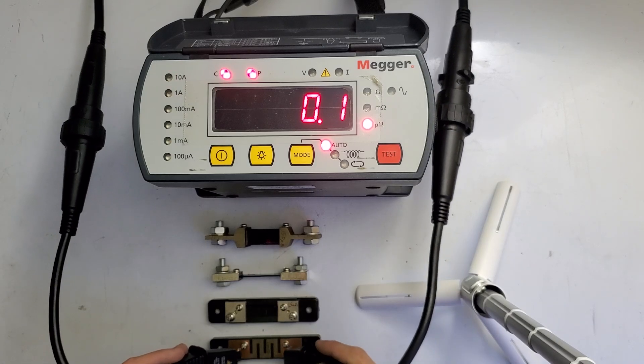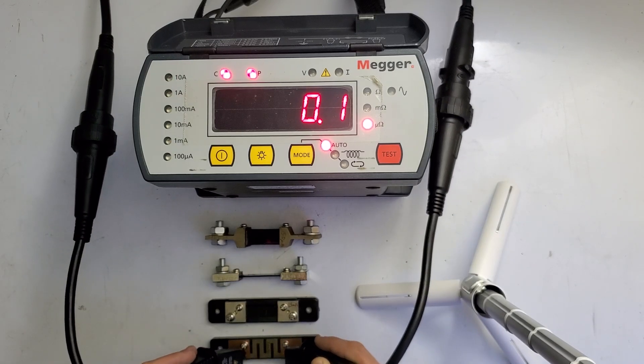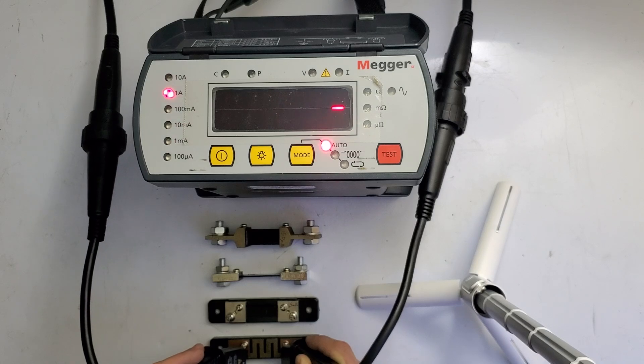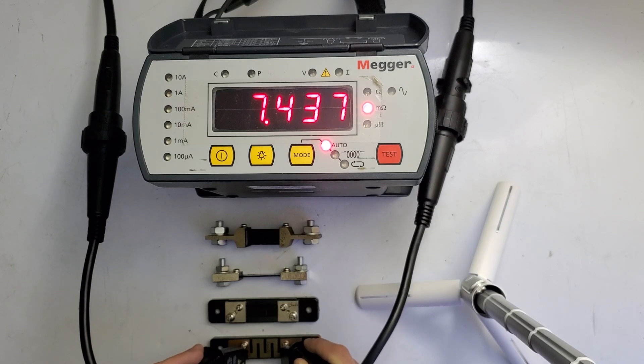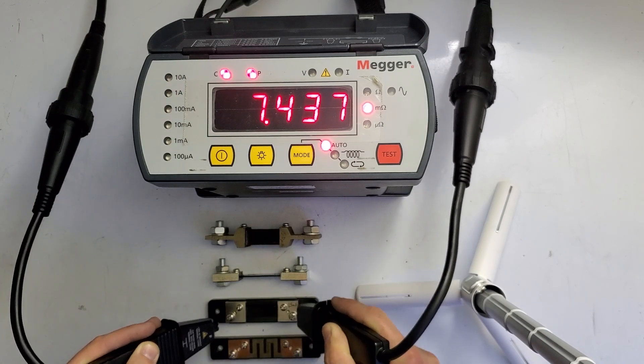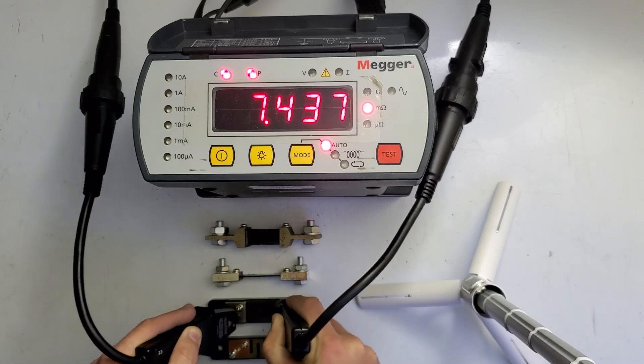Then any of these shunts will work, but I'll demo each one just for giggles. This should be 7.5 milliohms and it reads very close to that. This next one is 1.5 milliohms and it's very close to that.